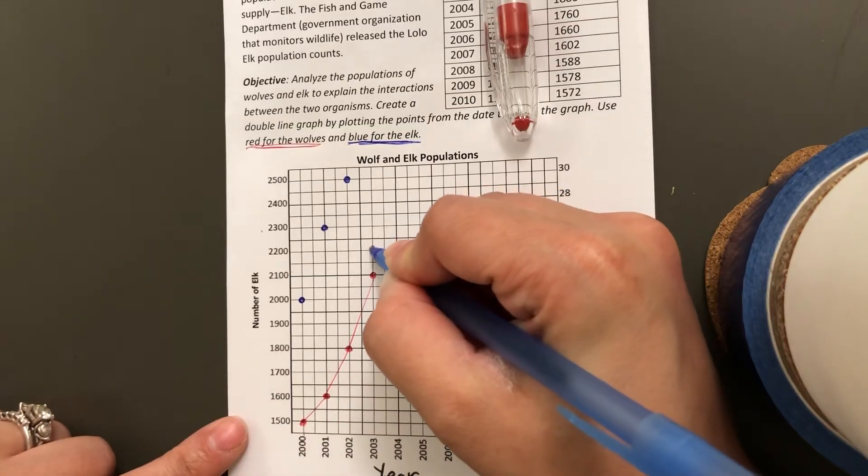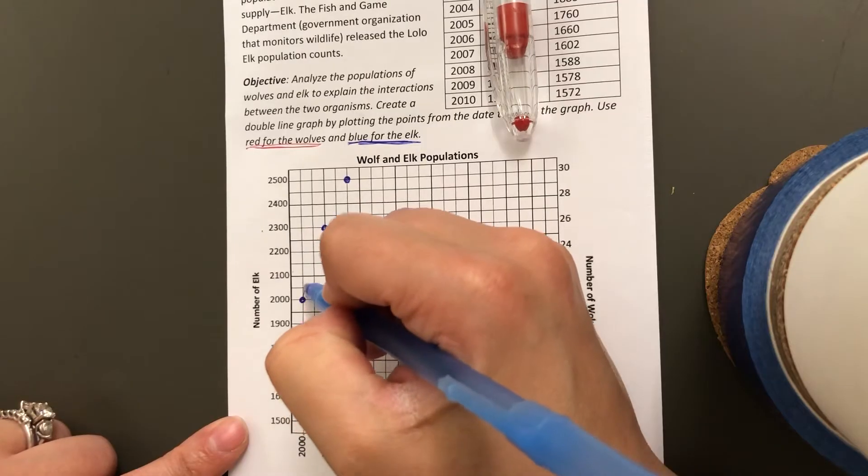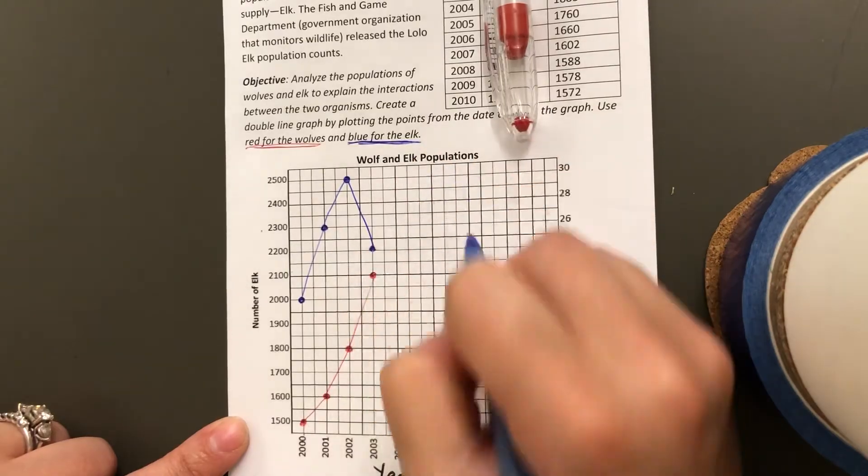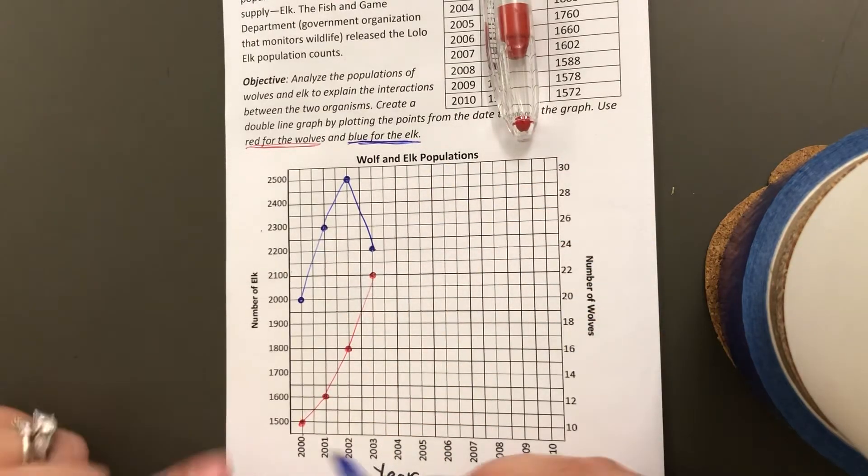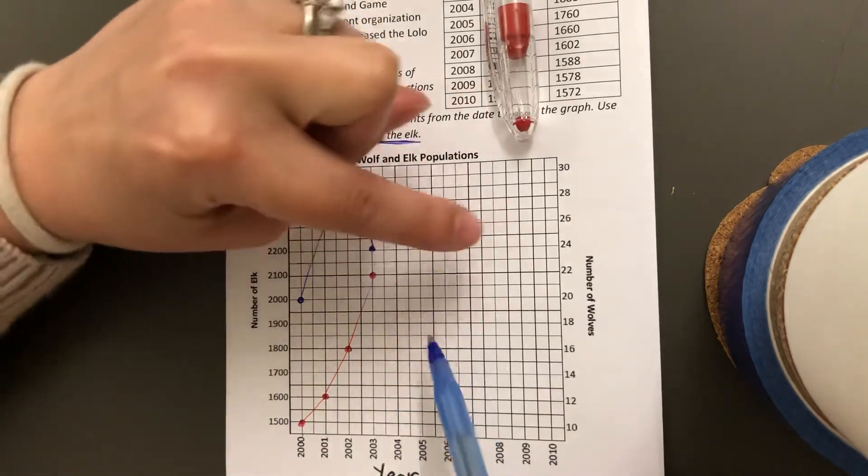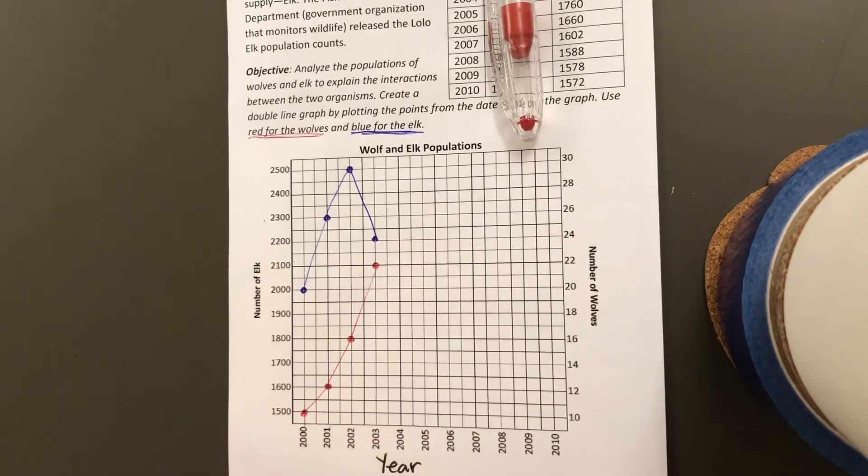And then I'm going to connect all of the dots with the lines in order, however that's going to look. And then when I'm all done plotting all of the points, I will be able to see how the lines are related to each other to see how the population fluctuations have affected each other.